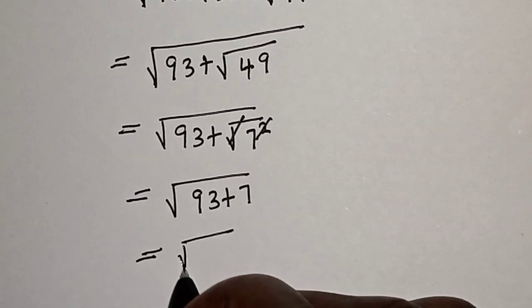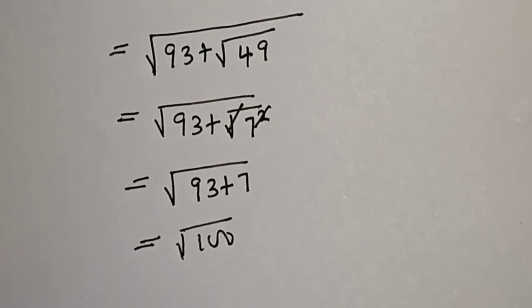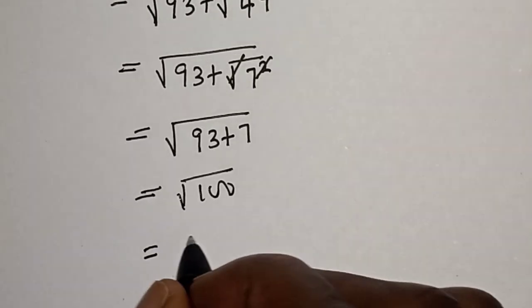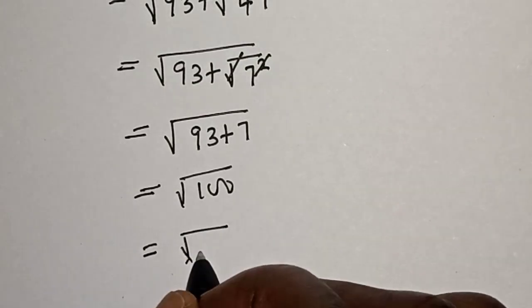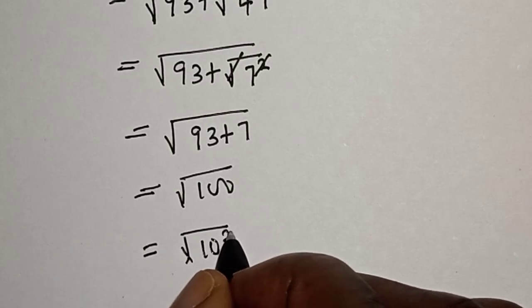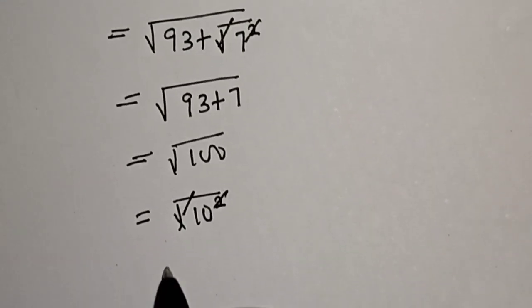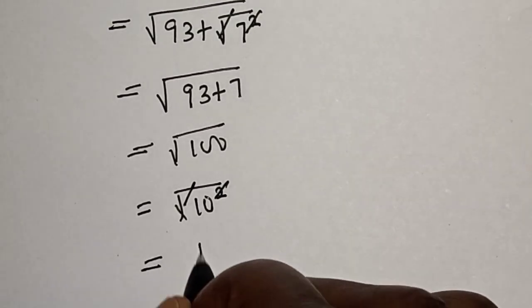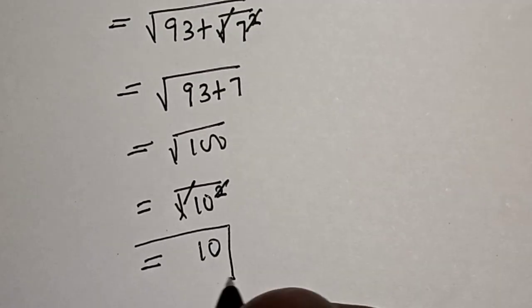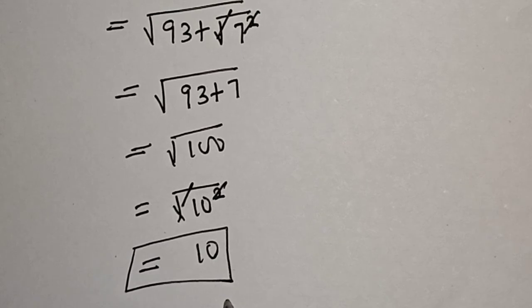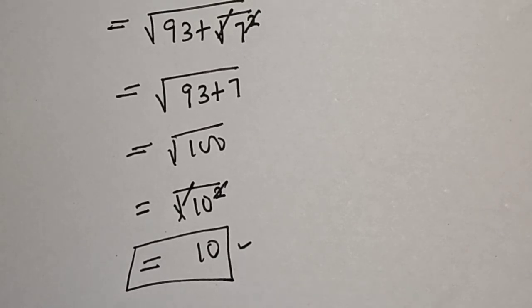That is square root of 100. Square root of 100 is 10. We square 10, so that cancels, and it is equal to 10. That is our final answer.